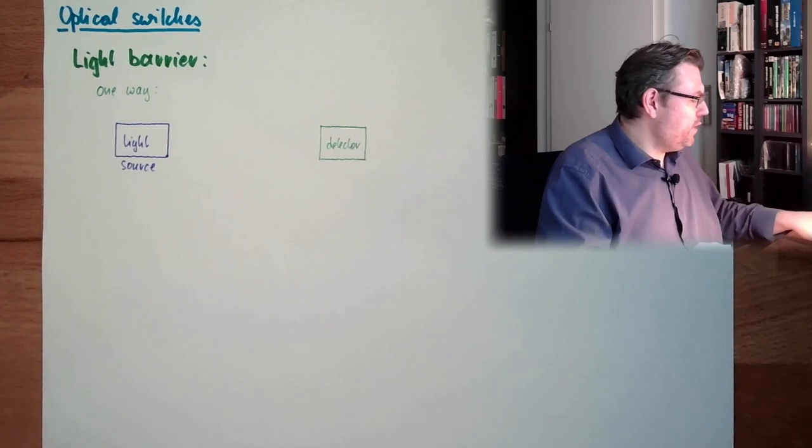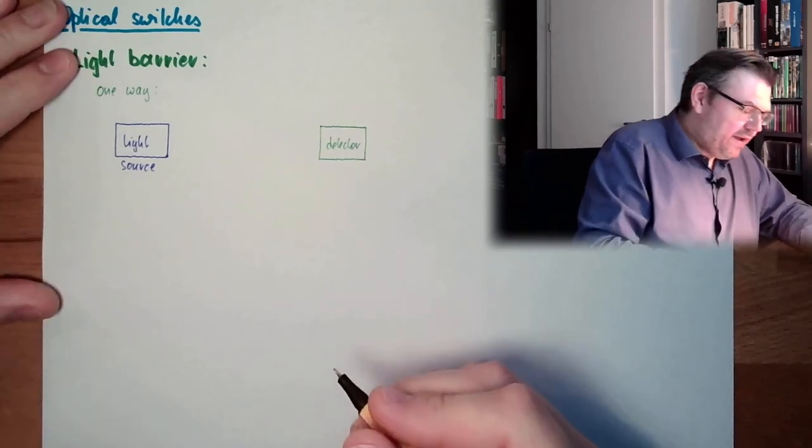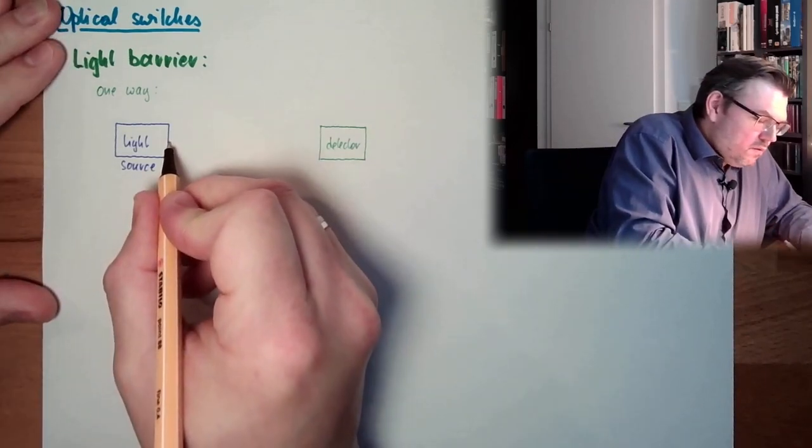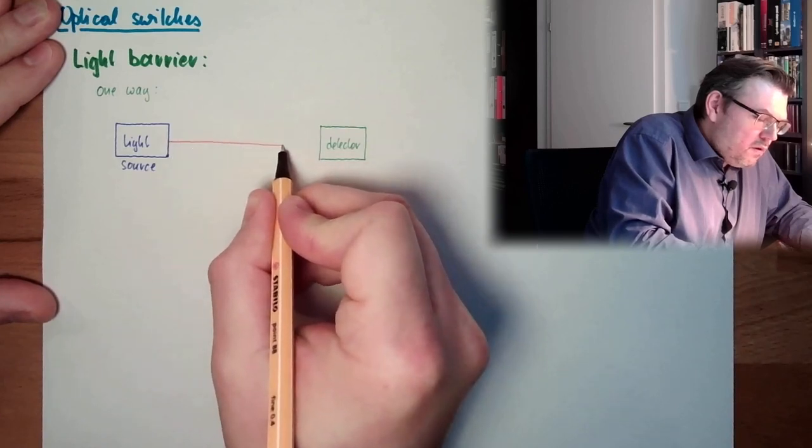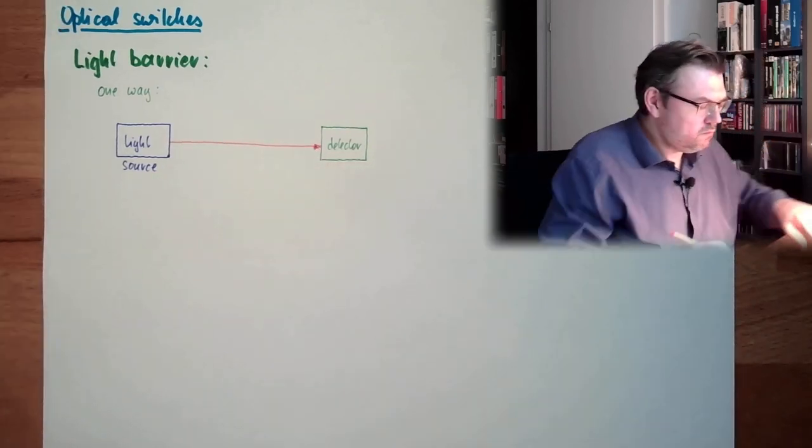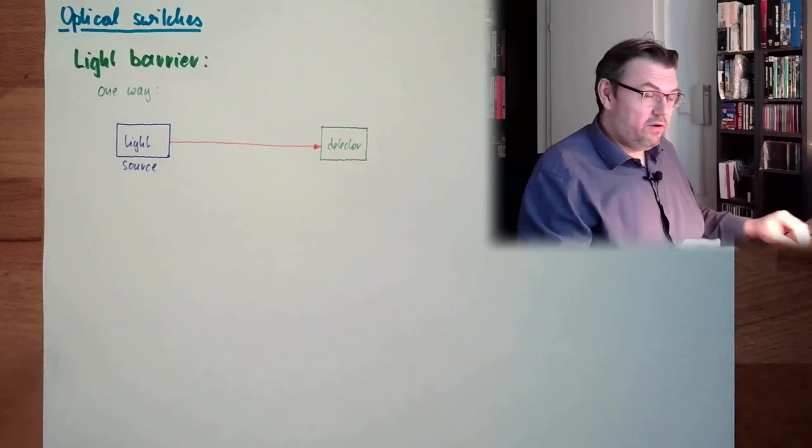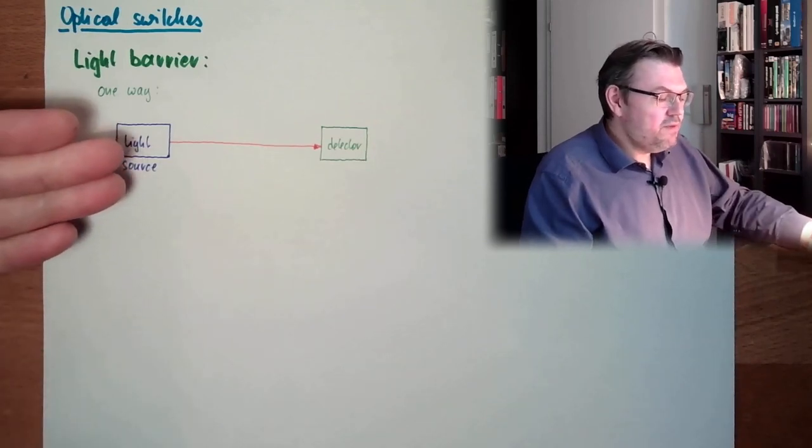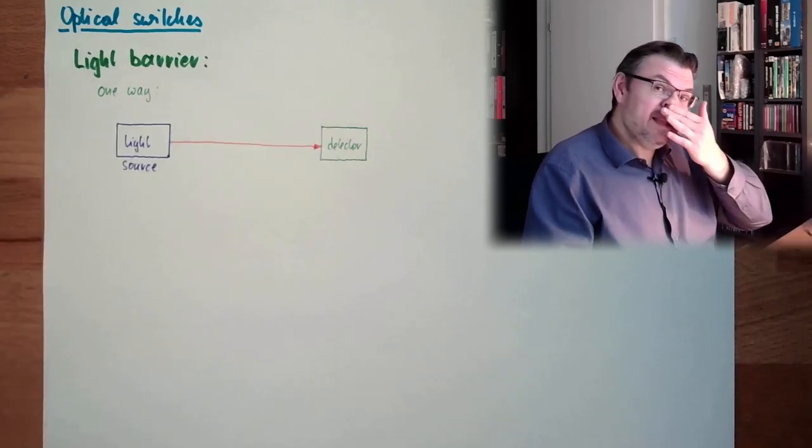And in between we have this light beam. That's how it looks like. The light source is emitting light. The detector is detecting the light.